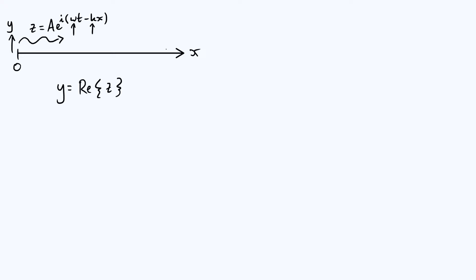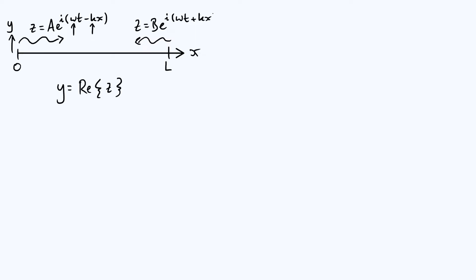Now let's place a fixed boundary by imagining clamping the string down at some particular value of x, which I'll call l — the length of the string. When the traveling wave reaches l it's going to reflect back, and we need a mathematical way to describe that reflection. The reflected left-traveling wave is described by z equals some amplitude b multiplied by e to the i times omega t plus kx, where the sign in the exponent has changed from minus to plus because it's now traveling to the left.